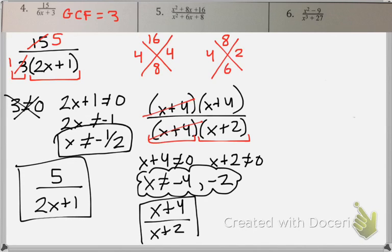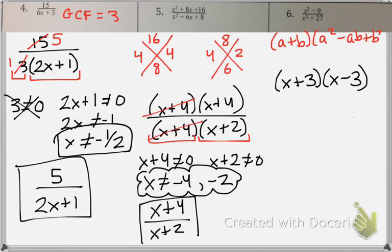This last one, my numerator, I can factor using difference of 2 squares. My denominator is sum of cubes. So that formula was a plus b times a squared minus ab plus b squared, where my a value equals x and my b value equals 3.